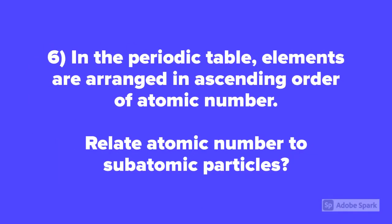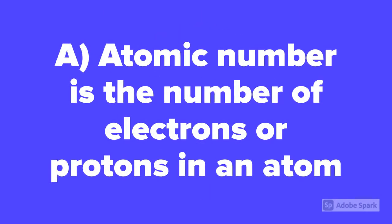Question number 6. In the periodic table, elements are arranged in ascending order of atomic number. Relate atomic number to the subatomic particles. Atomic number is the number of electrons or protons in an atom.